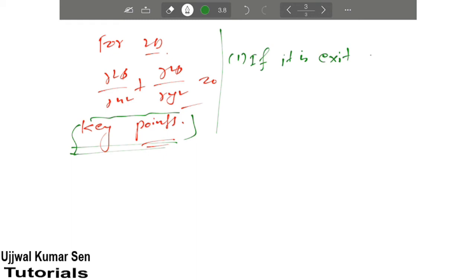First key point: if phi exists, then the flow is irrotational. If velocity potential exists, the flow is irrotational.